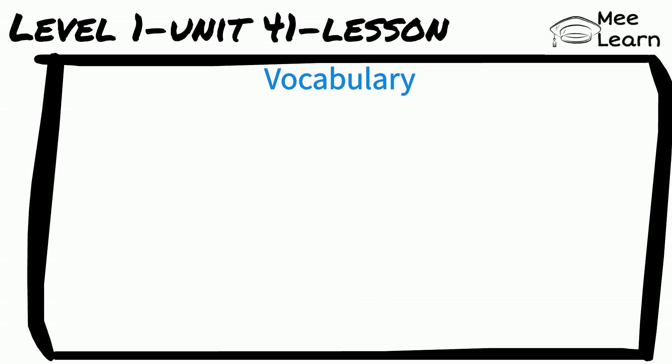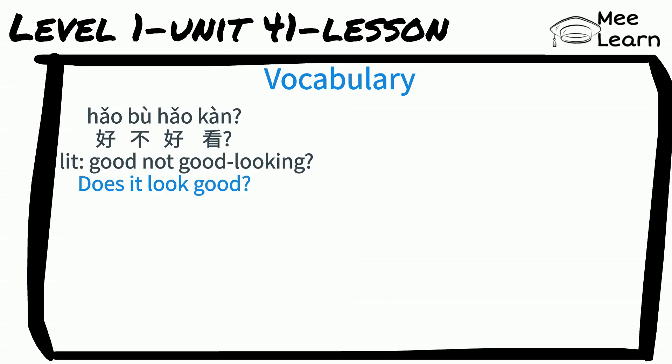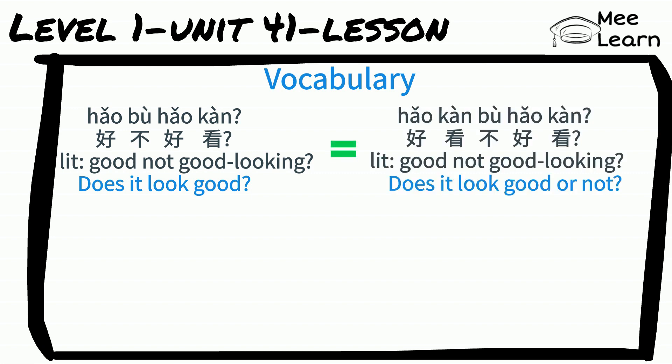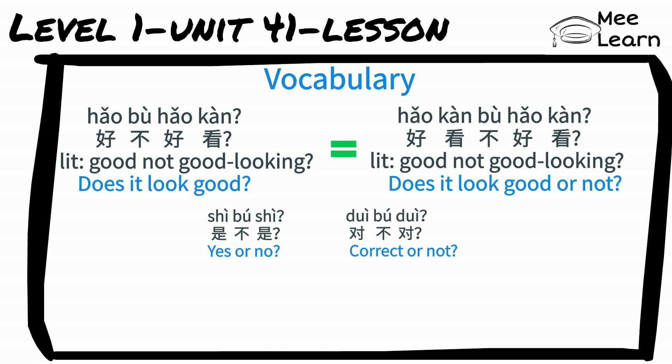Vocabulary: 好不好看 literally means 'good or not good looking' — 'Does it look good?' It's equivalent to 好看,不好看. We have learned this kind of pattern before. For example: 是不是 (yes or no), 对不对 (correct or not). Let's look at some more examples.